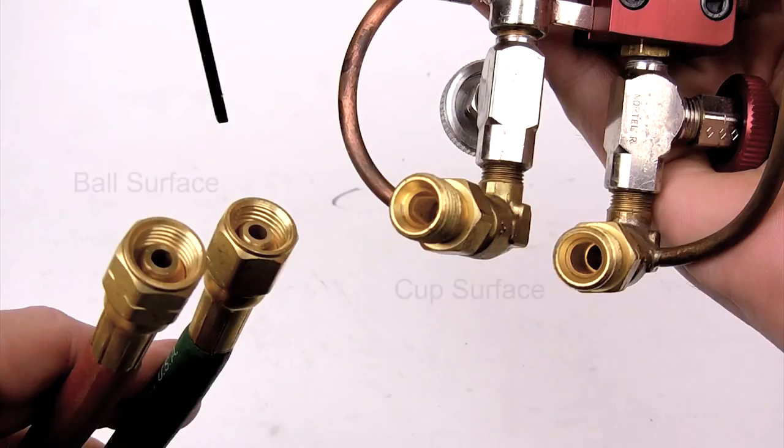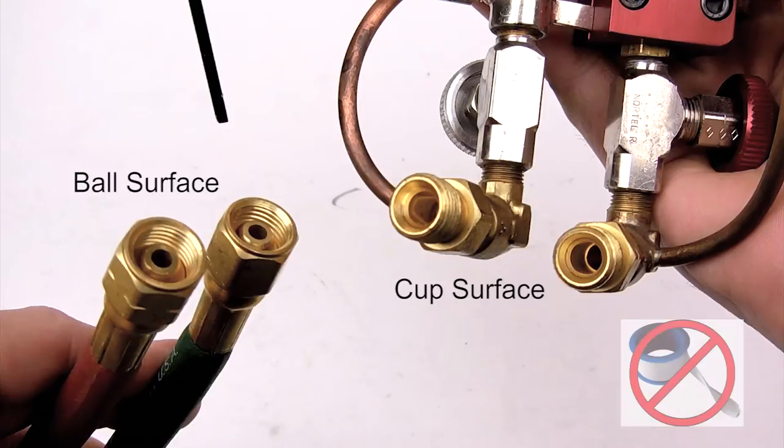These fittings make a tight seal using a ball and cup type of connection on the inside of the fitting. Do not use tape or putty on the threads of the fittings prior to installation. These fittings are not sealed by their threads and using such materials may damage the threads or cause improper seal.